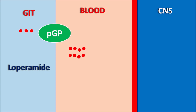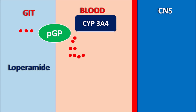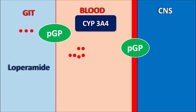Additionally, loperamide undergoes extensive metabolism in the liver by enzymes like CYP3A4, so only a limited number of drug molecules remain in systemic circulation to act on peripheral opiate receptors and produce the anti-diarrheal activity. At the blood-brain barrier, P-glycoprotein pumps are also present which efflux any loperamide molecules that attempt to enter the CNS, ensuring loperamide shows only peripheral actions.